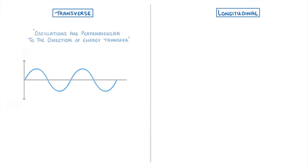The last thing we need to look at are the differences between transverse and longitudinal waves. In transverse waves, the oscillations are perpendicular to the direction of energy transfer, or the direction in which the wave is moving. Which is why on our drawing, the vibrations are going up and down, whilst the overall wave is traveling from left to right.